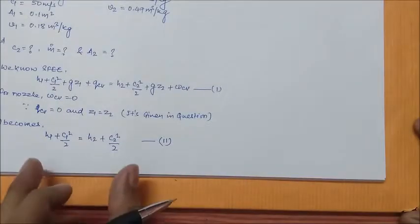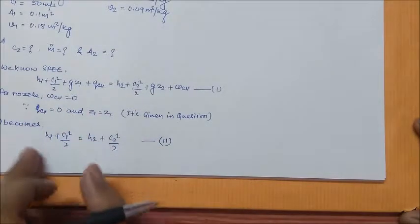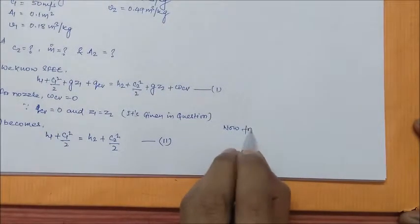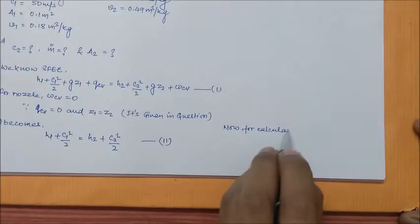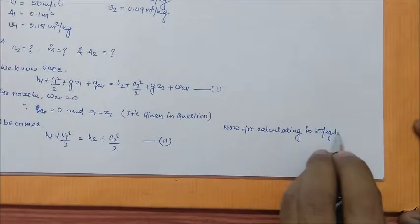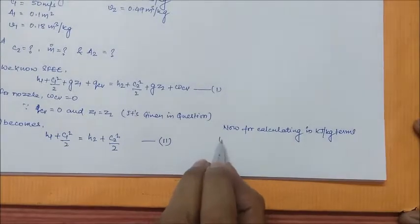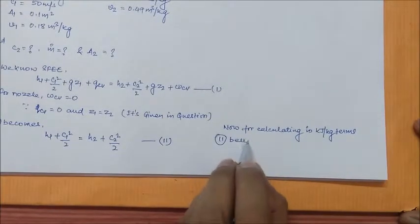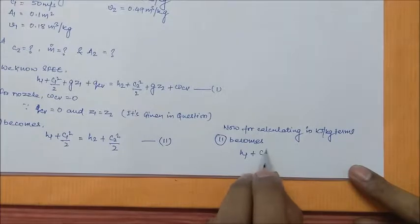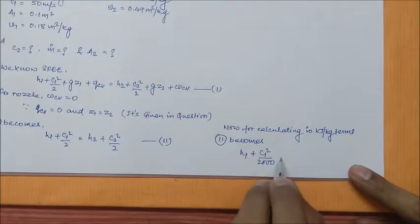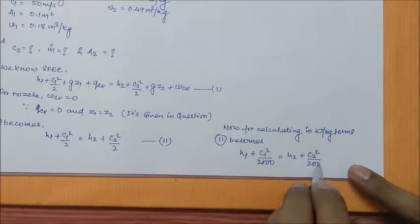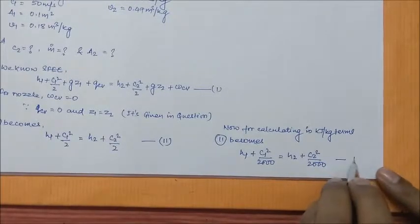Now if we want to calculate this question in terms of kilojoule per kg, equation 2 becomes H1 plus C1 square by 2000 equal to H2 plus C2 square by 2000. It's equation number 3.